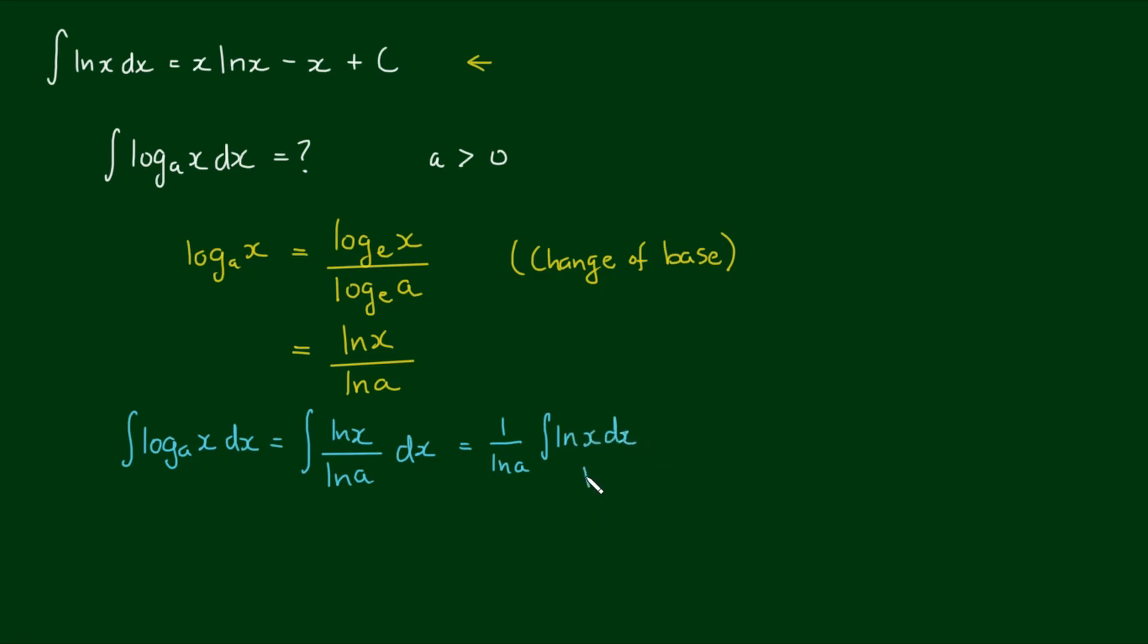And this is a result that I already know. So we have one over the natural log of a times x times the log of x minus x, and we add the integration constant c.